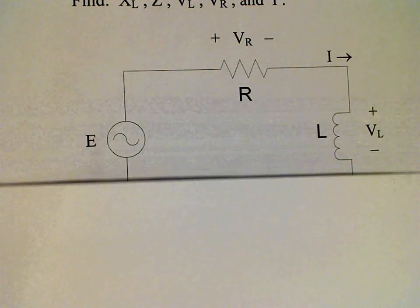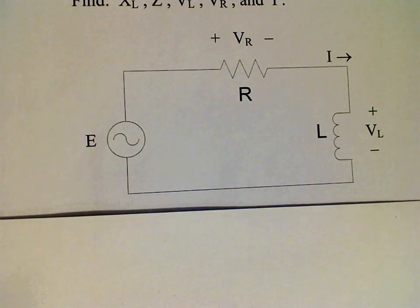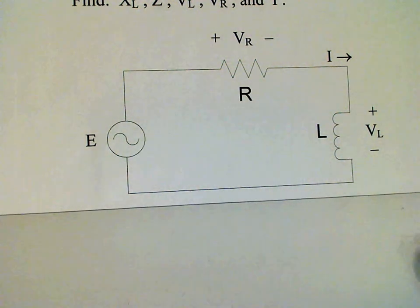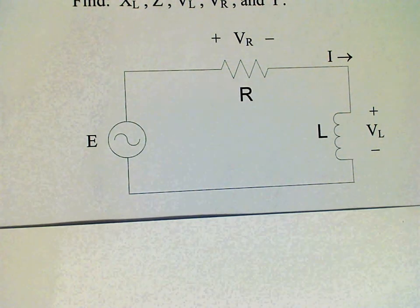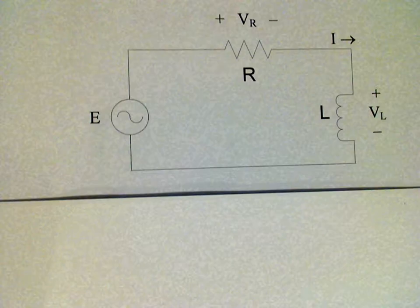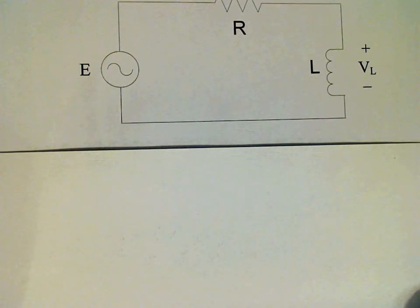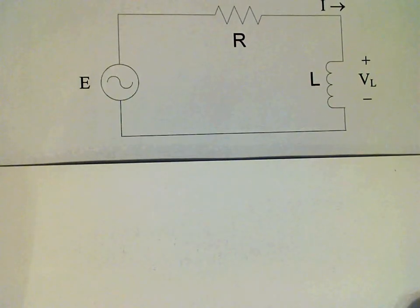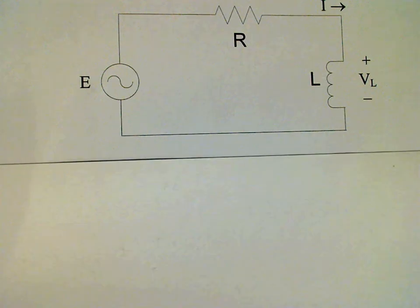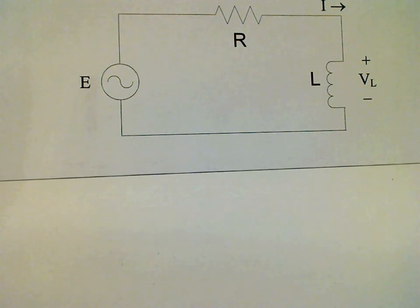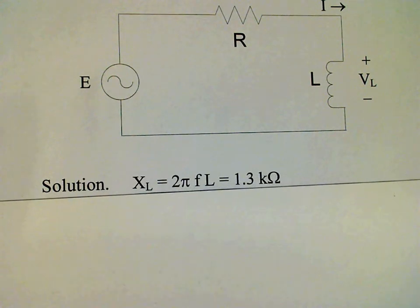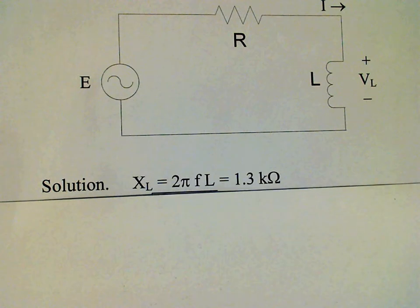Here's the circuit. The first thing we'll do is apply the formula for the inductive reactance, which is 2πfL. When we substitute in the numbers, we get 1.3 kΩ.